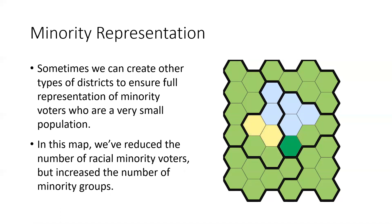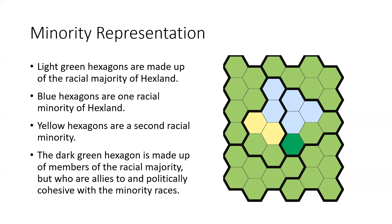Now we're going to get into a more complicated scenario. You may have situations where a racial minority is so small that you don't have the ability to give them a majority of any district, or you might have various racial minorities that are each small but different from one another. In this version of Hexland, the light green hexagons are the racial majority. The blue hexagons are one racial minority, and the yellow hexagons are a second racial minority. There is also a dark green hexagon made up of members of the racial majority who are allies to and politically cohesive with the racial minorities.